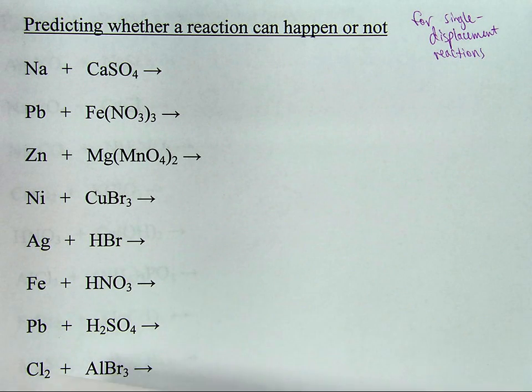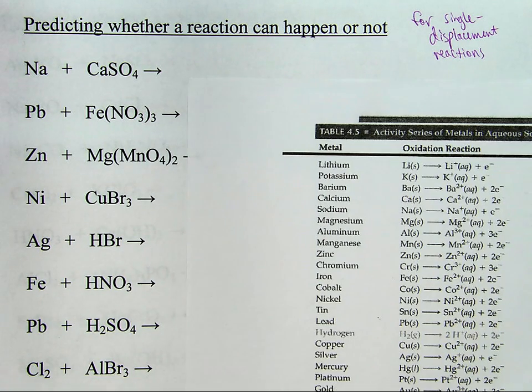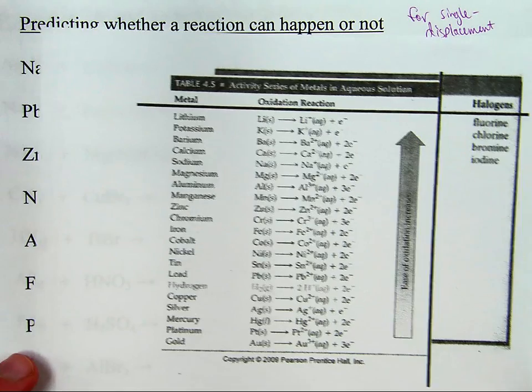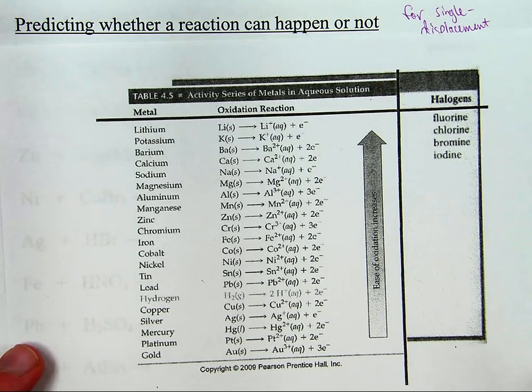For starters, if you're only predicting, you don't even need to work them out. You look them up here on this chart, the activity series of metals, which will be provided to you on the exam. It'll look just like this.